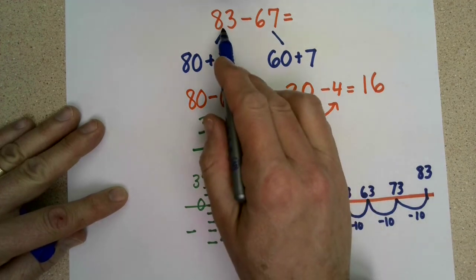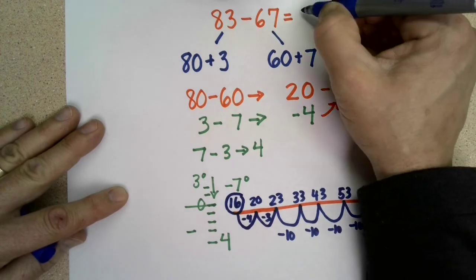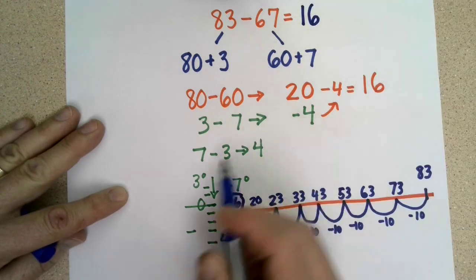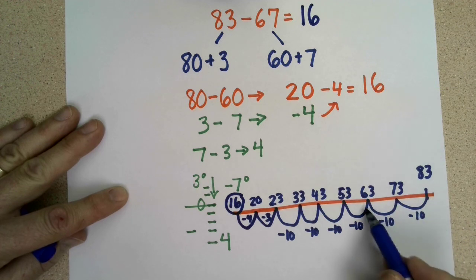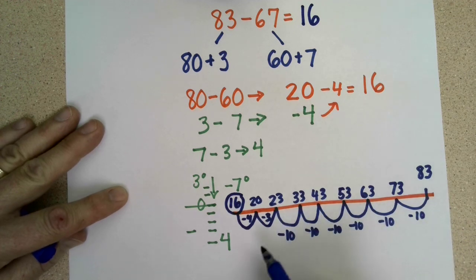So I can confirm that 83 minus 67 is 16, whether I split and use a negative number, or if I jump back on a subtraction number line.